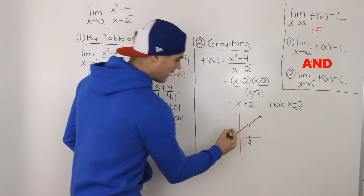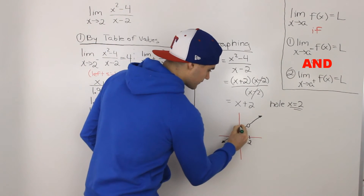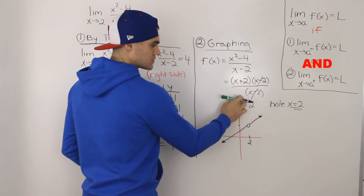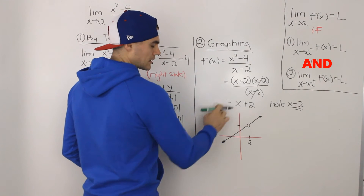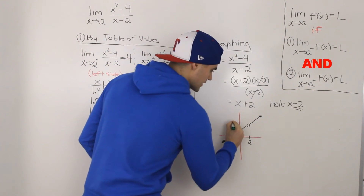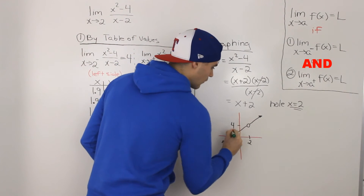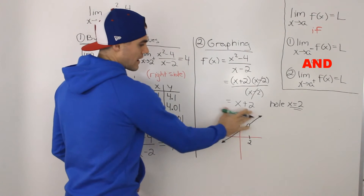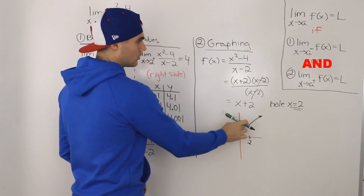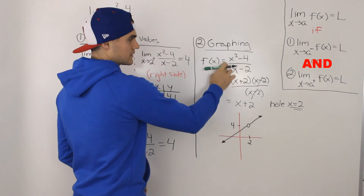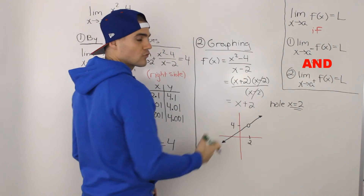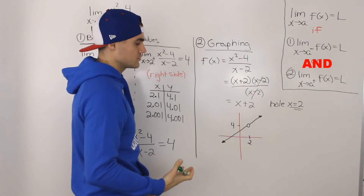The y value at that hole — we just plug 2 into the remaining expression: 2 plus 2 is 4. So this graph, this line with this hole, is what the function x squared minus 4 over x minus 2 looks like.